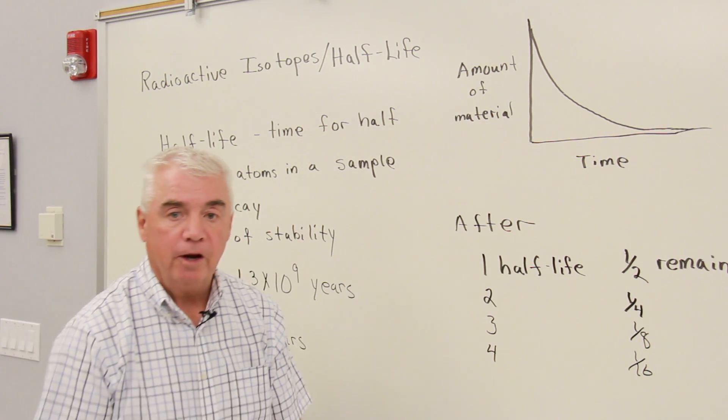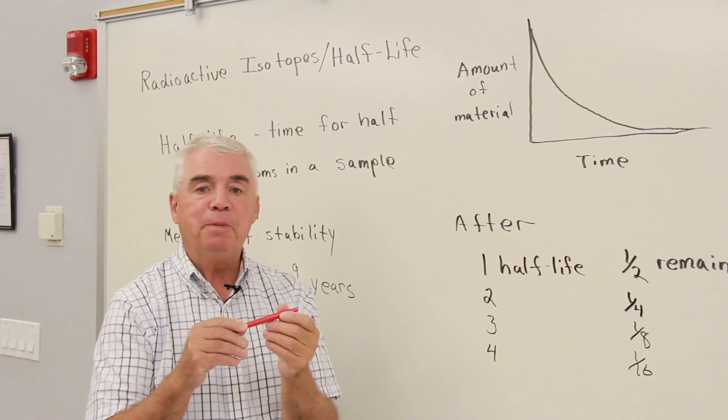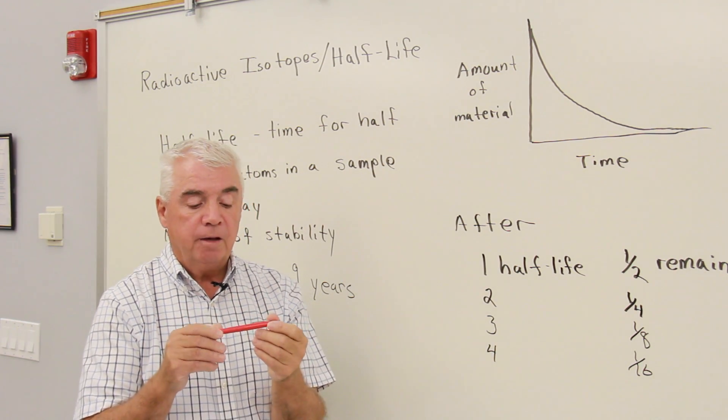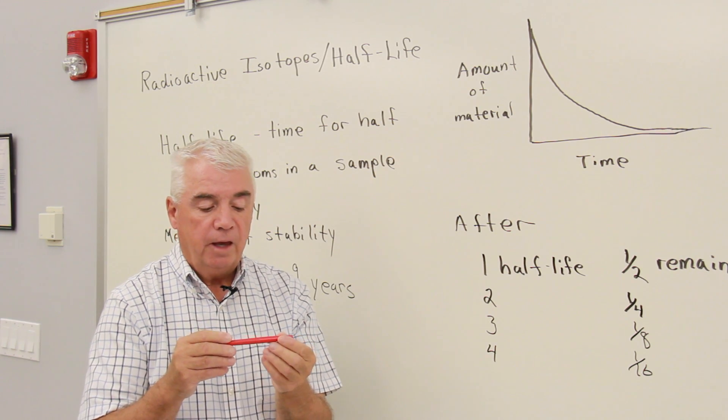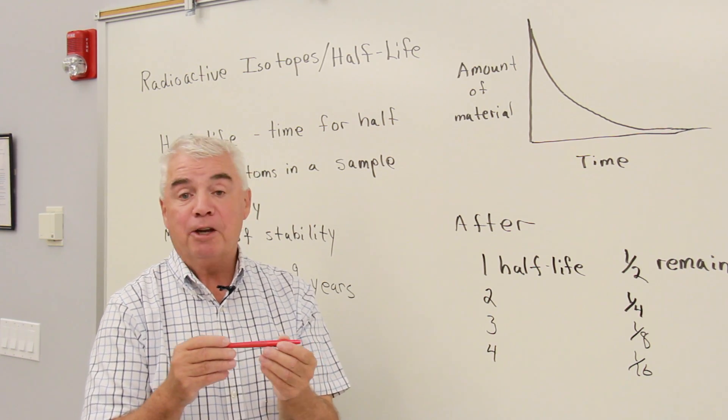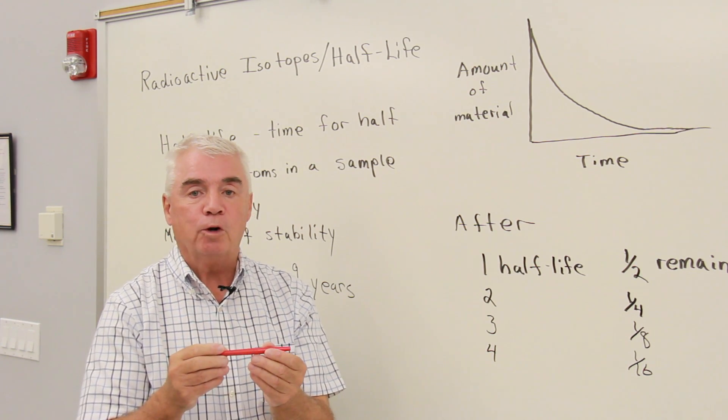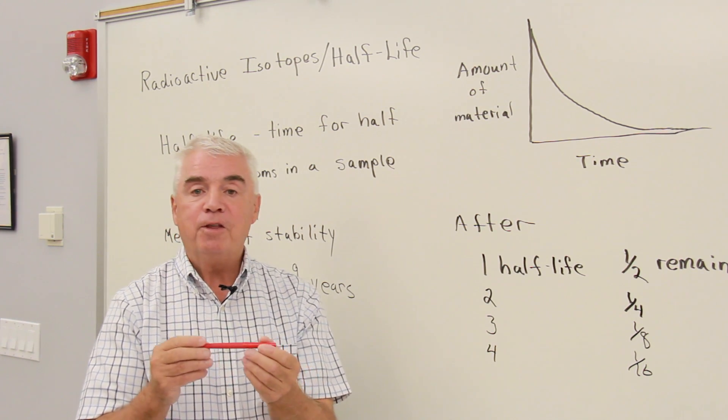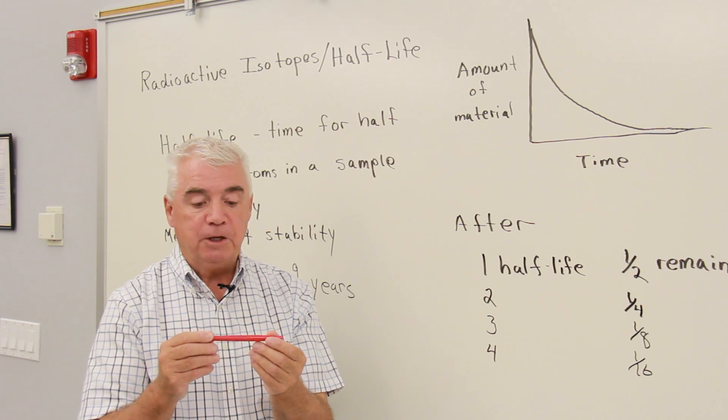Let me grab a pencil here, or a pen in this case. Pretend that this is a piece of chalk, and I'm going to use this piece of chalk on the board. As I do so, the chalk is going to be converted into chalk dust, and my piece of chalk will get shorter and shorter. Let's say that the half-life is 15 minutes for this piece of chalk.